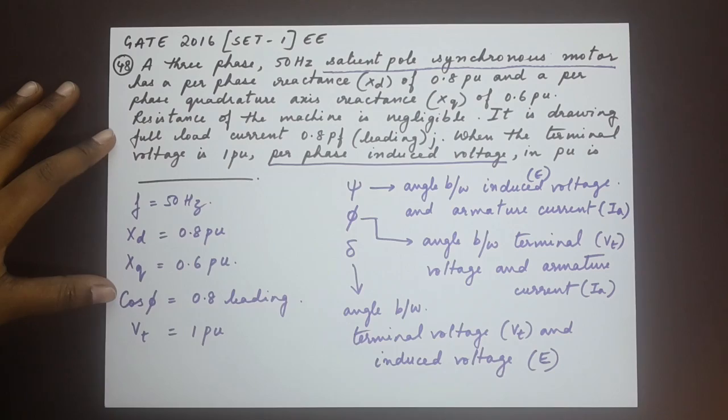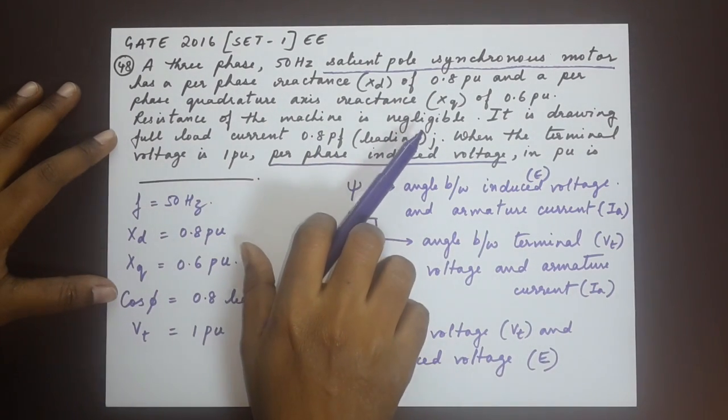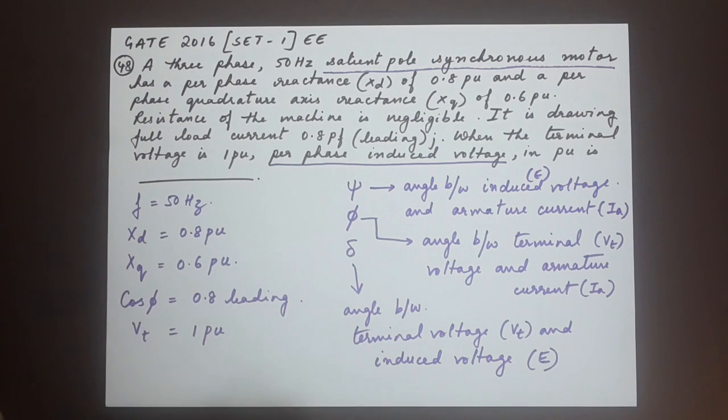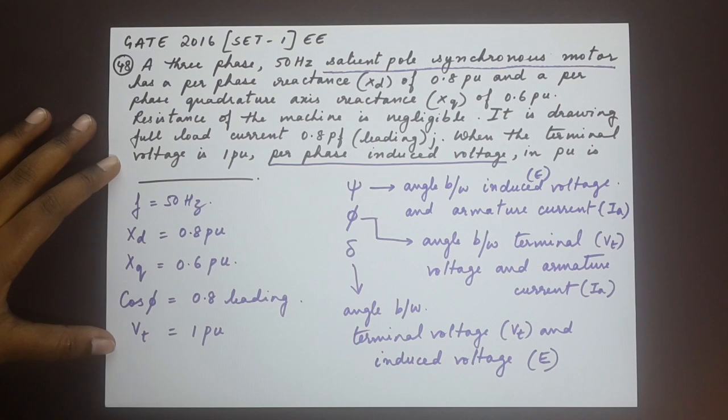Also, now since the question says that the resistance of the machine is negligible, we can ignore the armature resistance. So this is all that we have for now. Let me just get another sheet of paper.